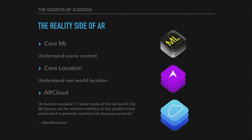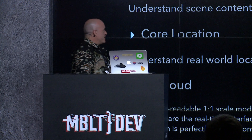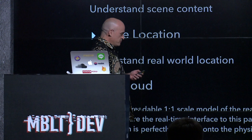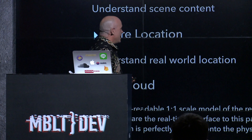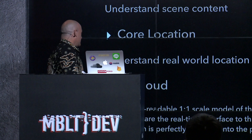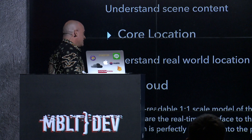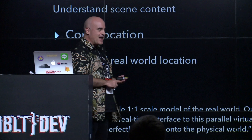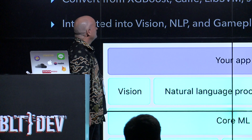The three things we're going to look at: how to get started with Core ML, how to understand actual scene content — the objects in the scene, not just planes to place things on; then Core Location — where are we in the real world, using both GPS and indoor location. Putting those together, what we're aiming for is AR Cloud: 'A machine-readable, one-to-one scale model of the real world, where AR devices are the real-time interface to a parallel virtual world perfectly overlaid onto the physical world.'